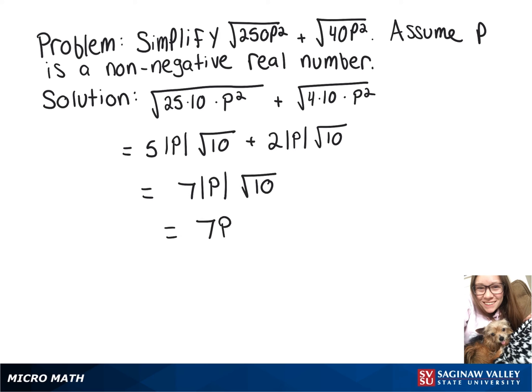Since the directions say that p is non-negative, we can take off those absolute value brackets, giving us 7p times the square root of 10.